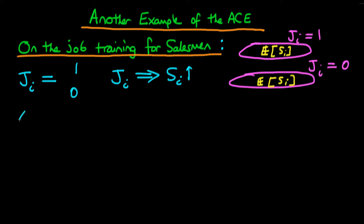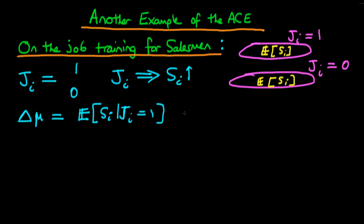Much like before, we can calculate the simple difference in means. The difference in means is the expected level of sales for a candidate in the trained group — where Ji equals one — minus the expected level of sales of a salesman when Ji equals zero, in other words for those candidates which didn't receive the on-the-job training.